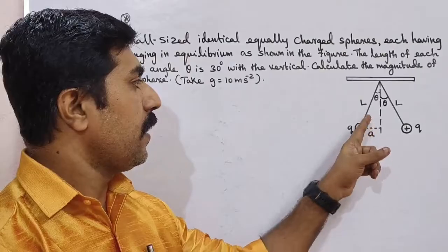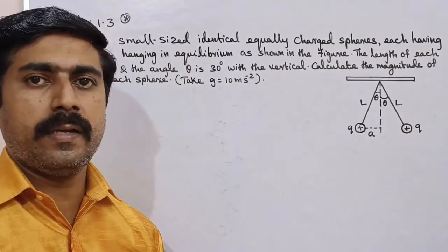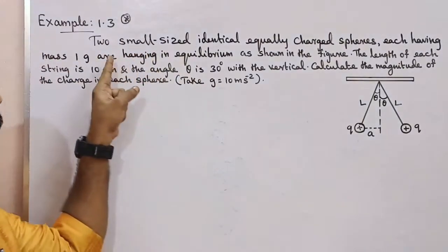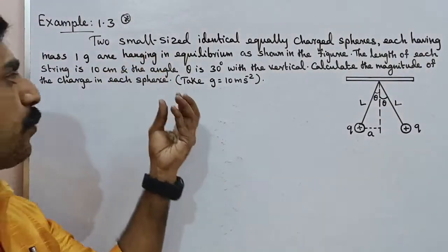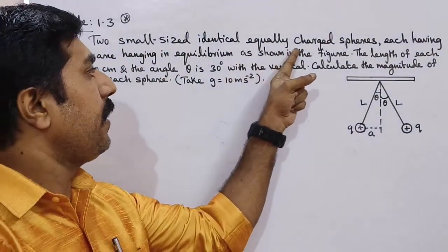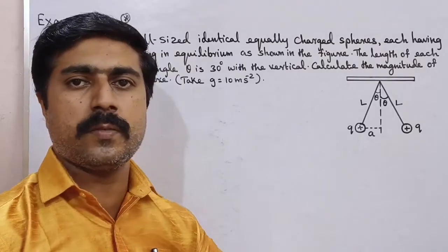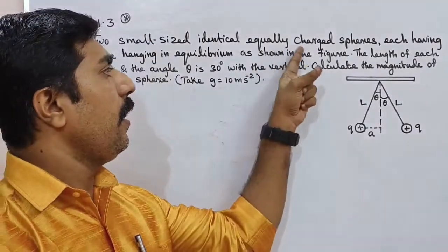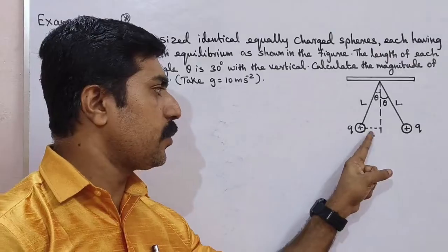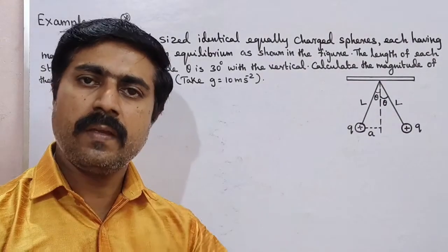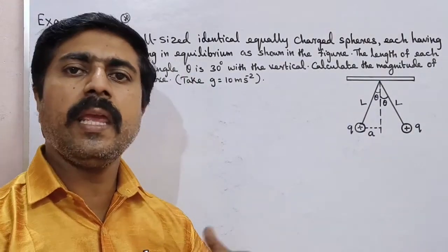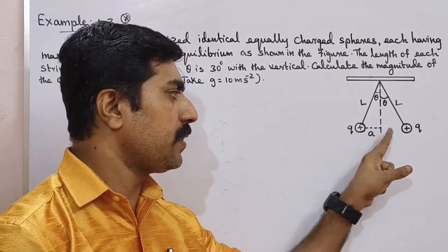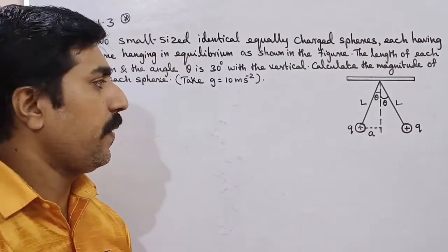See, we have a diagram. Look at the two identical spheres — two small sized identical equally charged spheres. They are equally charged, that's why we have Q and Q. Either both positive or both the same value.